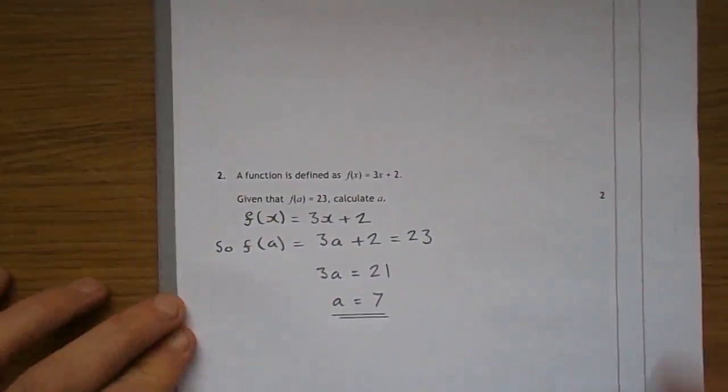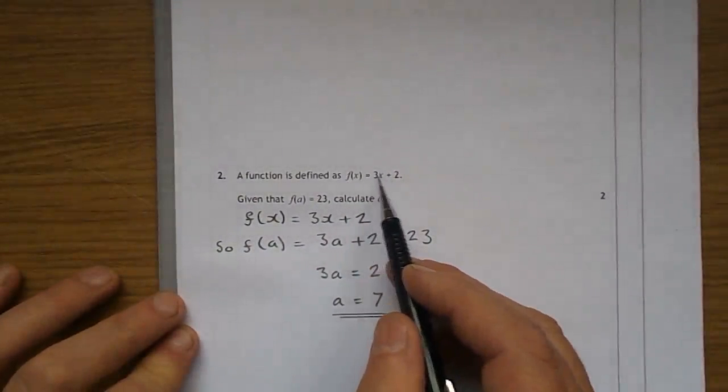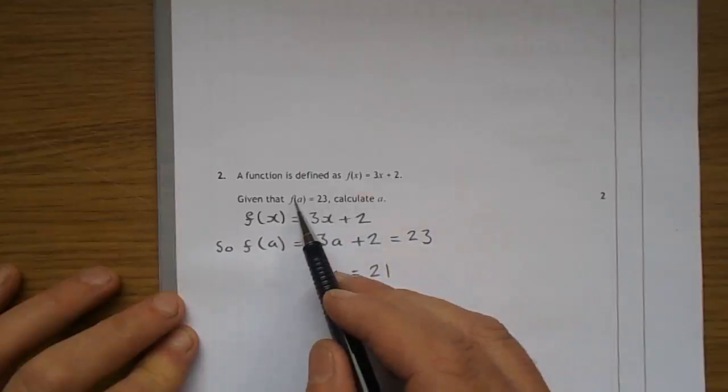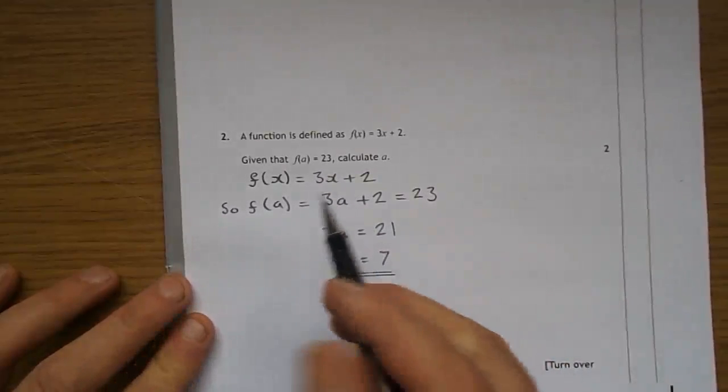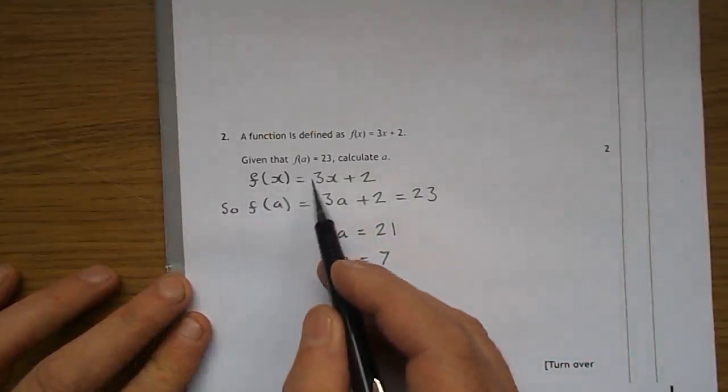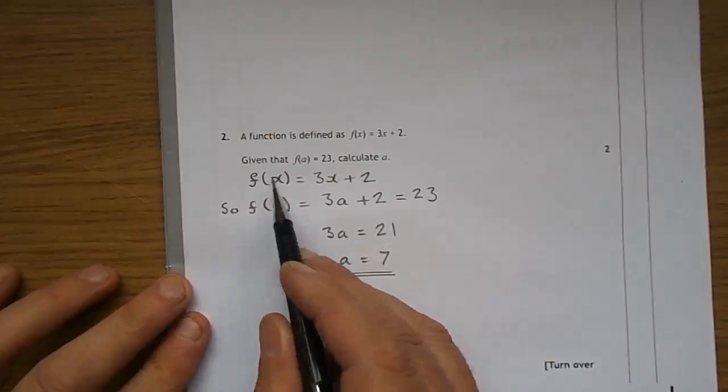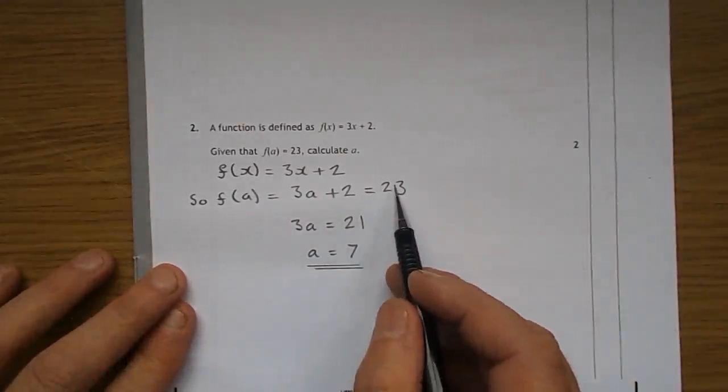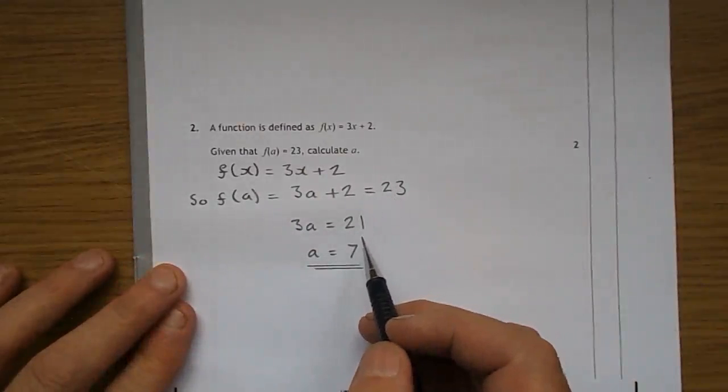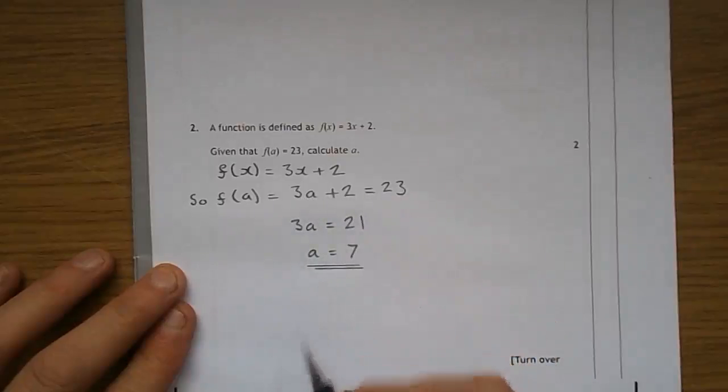Question 2. A function is defined by f of x is 3x add 2. Given that f of a is 23, calculate a. Well, if f of x is 3x add 2, then f of a, replacing x with a, is 3a add 2, and they tell you that that's equal to 23. 3a would therefore have to be 21, giving 23, so a is 7.